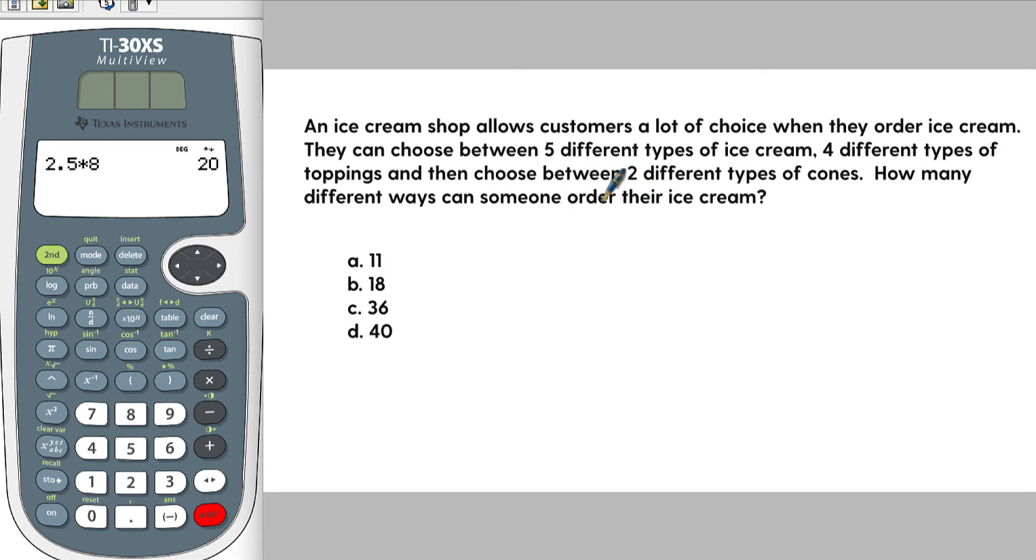So if you knew the types of ice cream and the different toppings, you could probably come up with some really elaborate way of counting them, but there is an easier way. You're going to take this number here, the different types of ice cream, and the different types of toppings, and the two different types of cones, and you multiply them together. So it's five times four times two, and that will give you your answer.